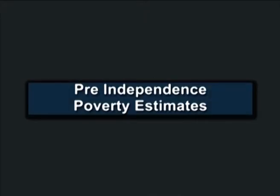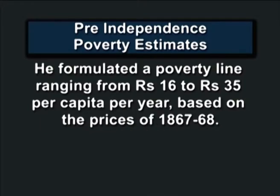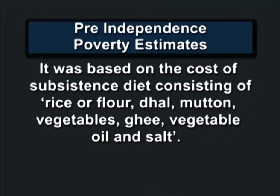Pre-independence poverty estimates: one of the earliest estimations of poverty was done by Dadabhai Naoroji in his book 'Poverty and the Un-British Rule in India.' He formulated a poverty line ranging from rupees 16 to rupees 35 per capita per year, based on the prices of 1867-68. It was based on the cost of a subsistence diet consisting of rice or flour, dal, mutton, vegetables, ghee, vegetable oil, and salt.